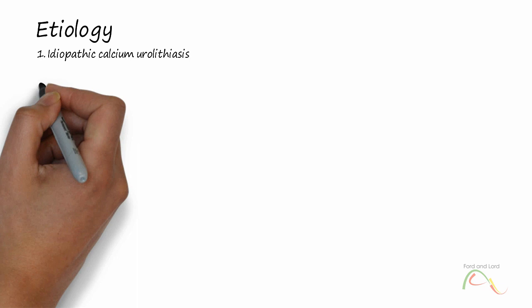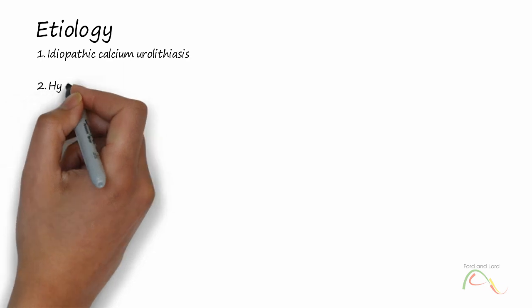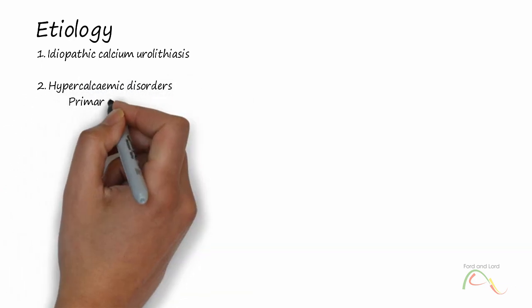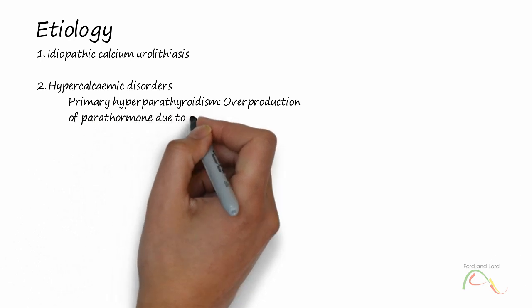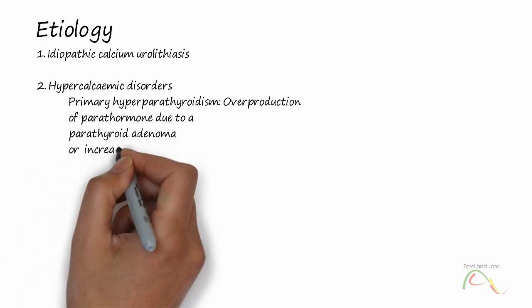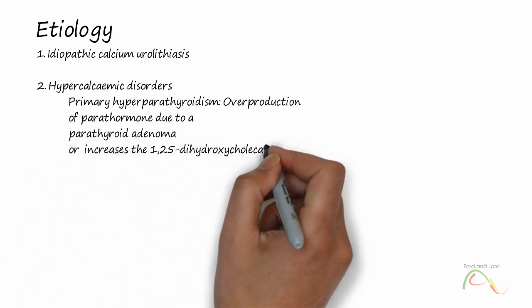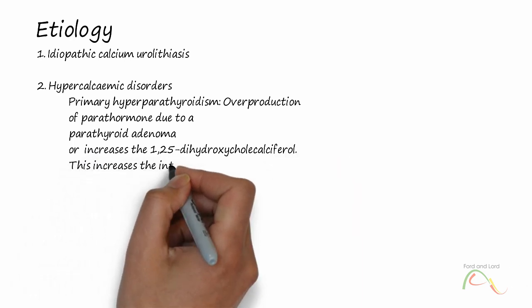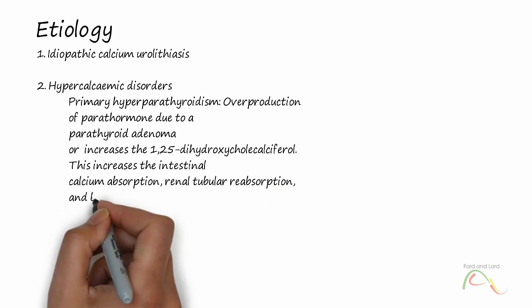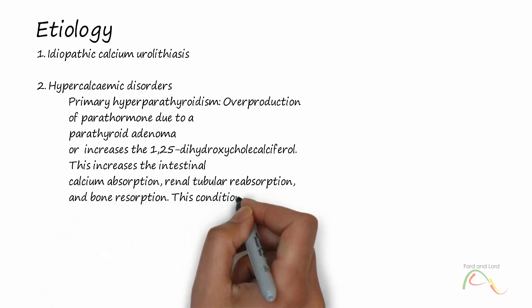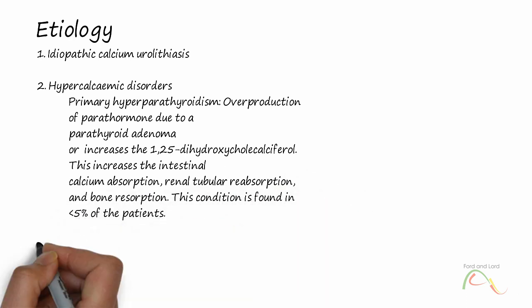Hypercalcemic disorders such as primary hyperparathyroidism. Overproduction of parathormone due to a parathyroid adenoma or hyperplasia increases the 1,2,5-dihydroxycholecalciferol. This increases the intestinal calcium absorption, renal tubular reabsorption, and bone resorption. This condition is found in less than 5% of the patients.